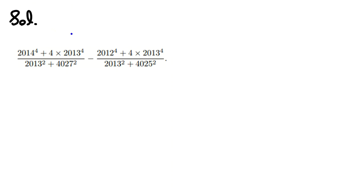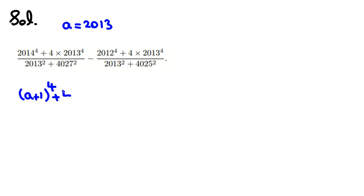For solving this problem, I set A = 2013 and write the expression in terms of A. The first term: 2014 = A + 1, so we have (A + 1)⁴ plus 4 times 2013⁴, which is 4A⁴, all over — 2013 is A, so A², plus...